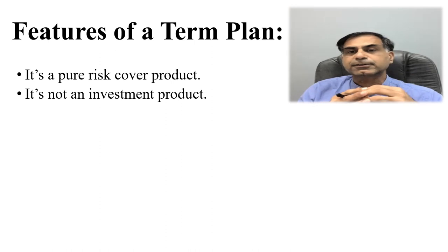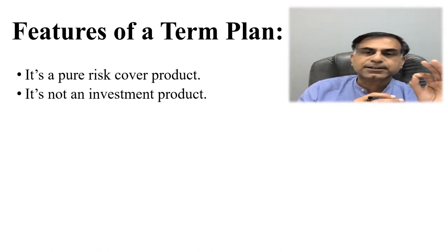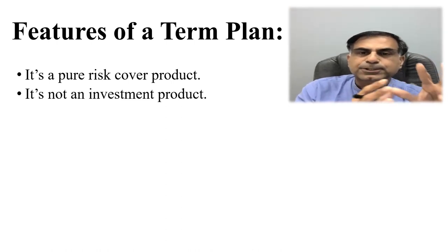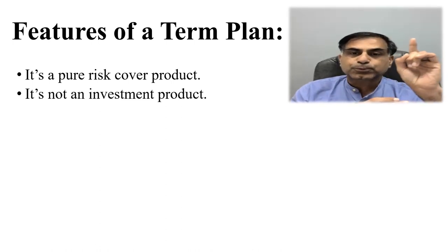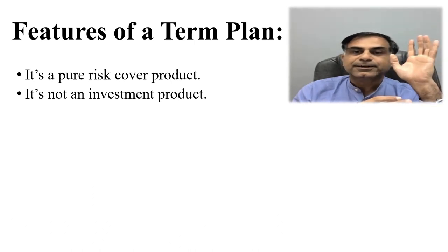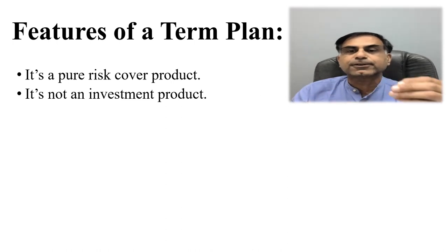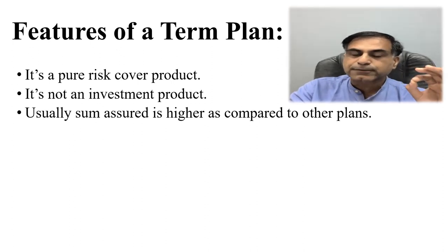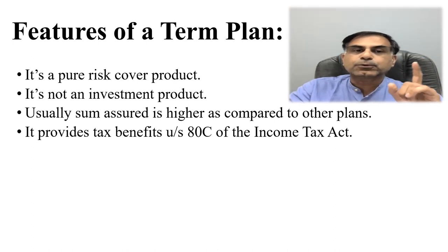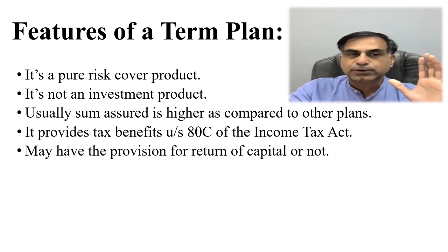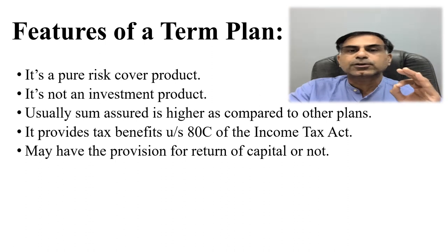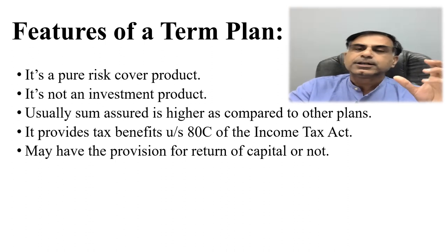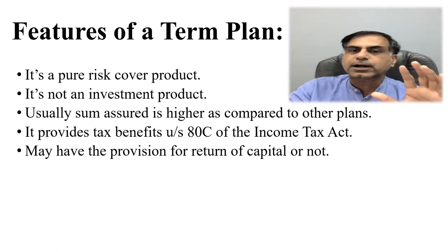Risk cover means: say Mr. A obtains a risk cover of rupees 1 crore at the age of 35. Unfortunately, if he passes away, he leaves 1 crore rupees net wealth to his legal heirs, which ensures the smooth further survival of the family. This is a risk cover product. Endowment and ULIP plans do not give you such a huge risk cover as a term plan does. A term plan also provides tax benefit under Section 80C of the Income Tax Act, 1961. There may also be provision for return of capital — the premium you paid may be returned after a certain age — but that is optional.